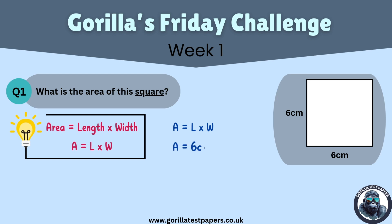Area equals 6cm multiplied by 6cm. Because this is a square, both sides are the same length. Therefore, when we multiply 6cm by 6cm, the answer is 36cm squared.